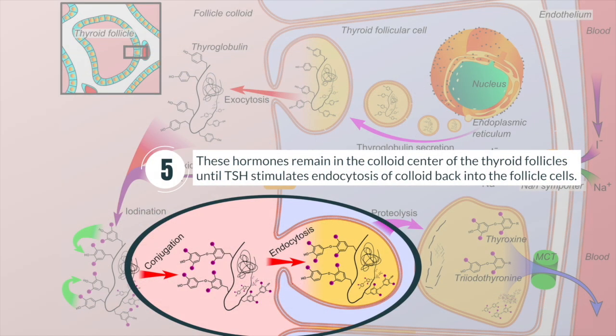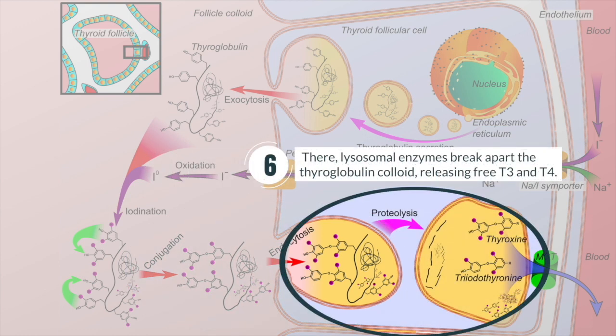These hormones remain in the colloid center of the thyroid follicles until TSH stimulates endocytosis of the hormones back into the follicle cells. There, enzymes break apart the tyroglobulin, releasing free T3 and T4. T3 and T4 then diffuse across the cell membrane and enter the bloodstream.